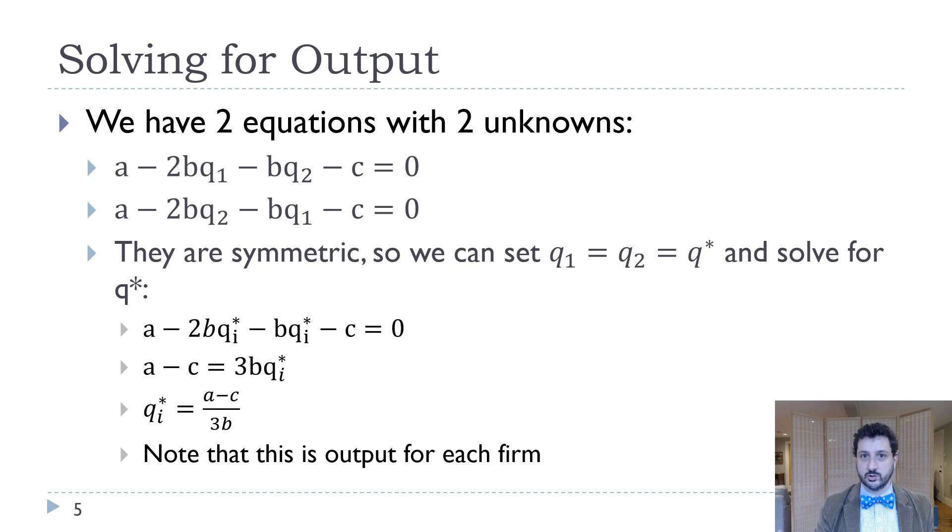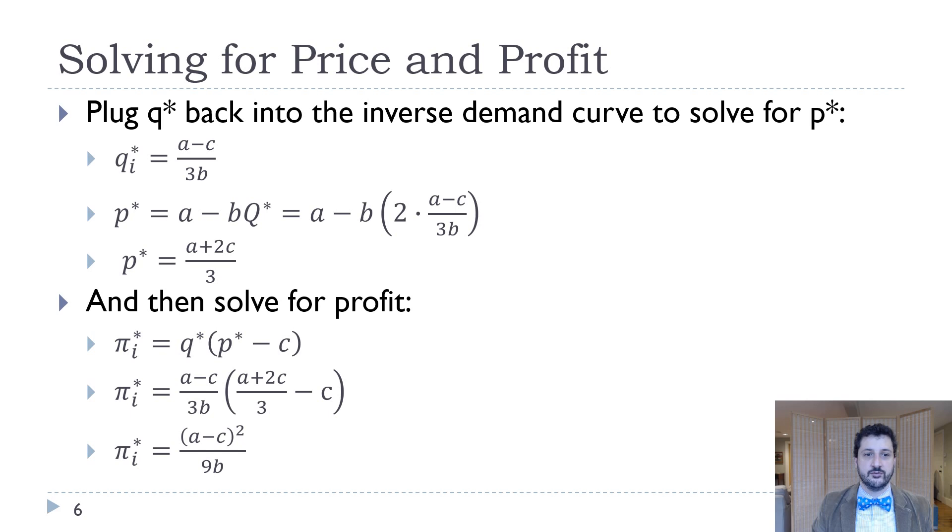So we've got our profit maximizing quantity for each firm. We're going to plug that back into our inverse demand curve to solve for P star. We just need to multiply by two in order to get capital Q star. So that's A minus B times two times A minus C over 3B. Once again, the Bs cancel out. And the negative and negative become a positive. So we get A plus 2C over 3 is our equilibrium price.